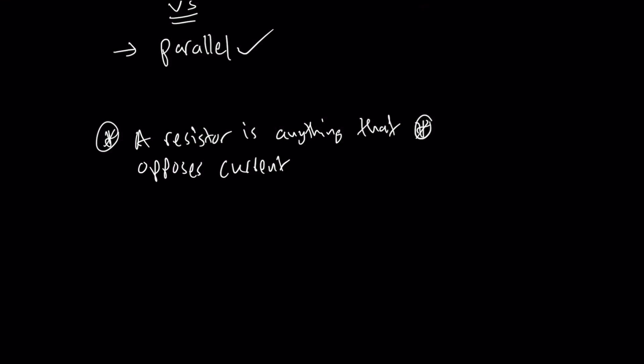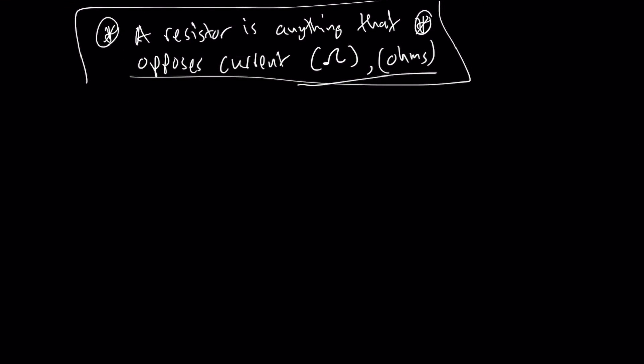This lesson we're going to have a basic explanation on the differences between series and parallel connections and how they are arranged. A resistor is anything that opposes current, given a specific symbol, and it is measured in ohms — the unit of measurement for resistance. Normally when drawing a circuit, this symbol represents a resistor in any schematic.